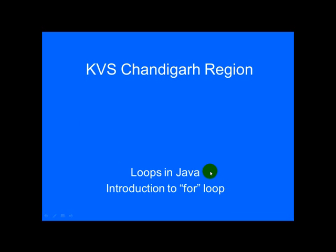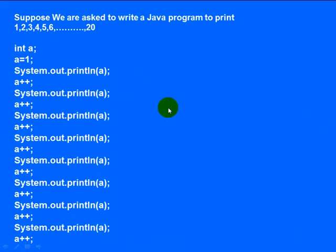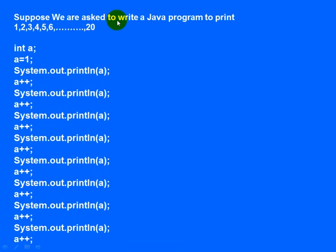Loops in Java. Introduction to the for loop. Suppose we are asked to write a Java program to print a series of numbers: 1, 2, 3, 4, 5, 6, up to 20.